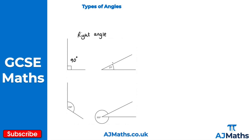An angle that's less than 90 degrees is what we call an acute angle. For an angle that's greater than 90 degrees, like we can see here, this is what we call an obtuse angle.